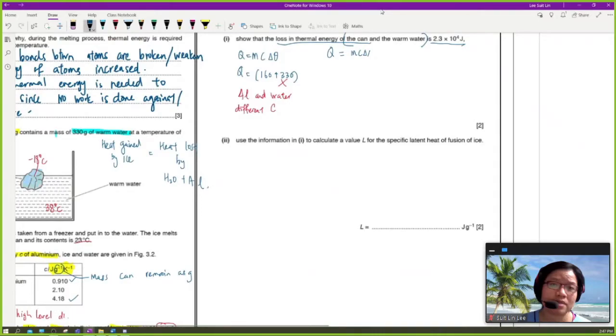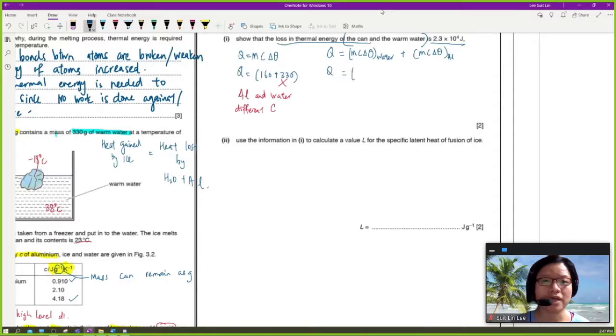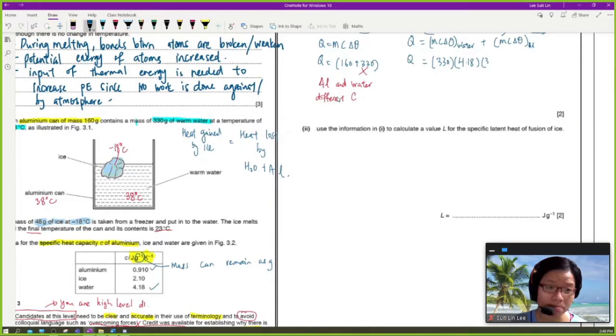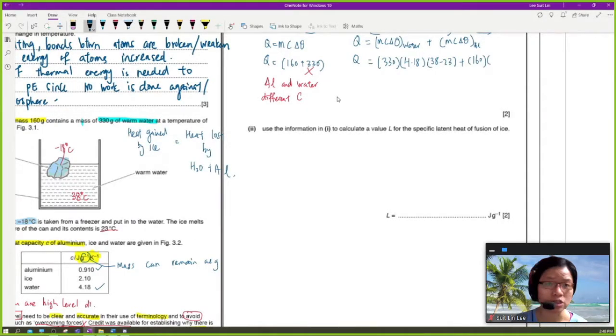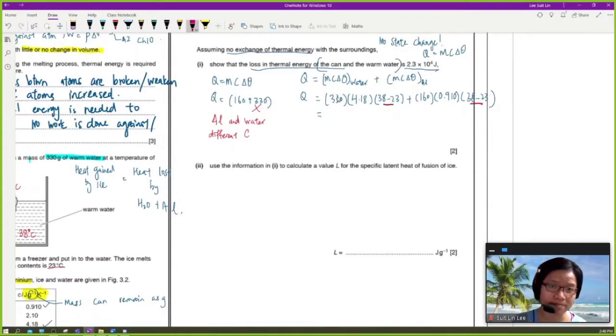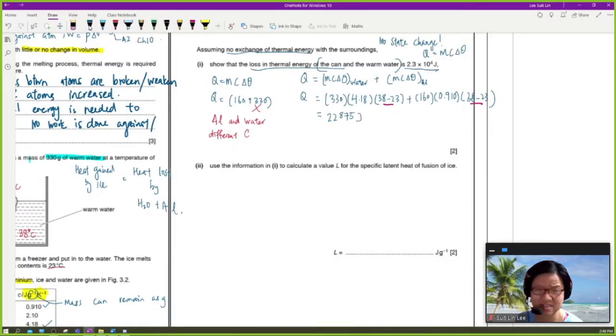So Q is MC delta theta for water plus MC delta theta for aluminium. So we will then substitute the mass of the water, 330, times the specific heat capacity of the water, which is 4.18 joule per gram. And the change in temperature will be 38 minus 23 because the final temperature is 23 degrees Celsius. Repeat the same process for the aluminium can again. So 160 grams for aluminium can. Change in temperature also will be the same for aluminium can and water. So then you can press your calculator. You get 22875 joule, which is around 2.3 times 10 to the power of 4 joule.